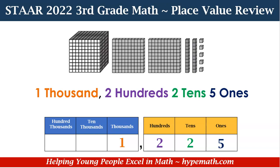If you notice, we have 1 thousands block, 2 hundreds blocks, 2 tens blocks, and 5 ones blocks. Let's look and see how that looks on the place value chart. For the thousands place we have a 1, in the hundreds place we have a 2, in the tens place we have a 2, and in the ones place we have a 5.